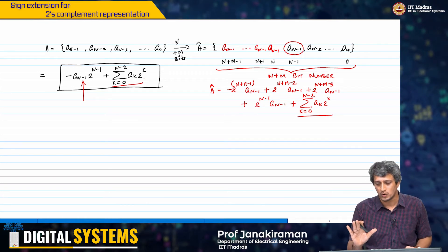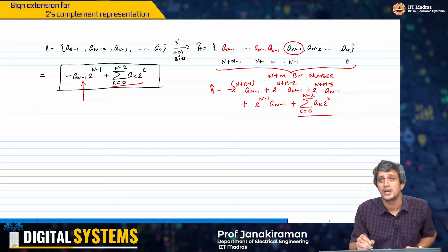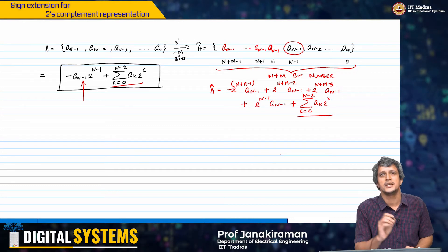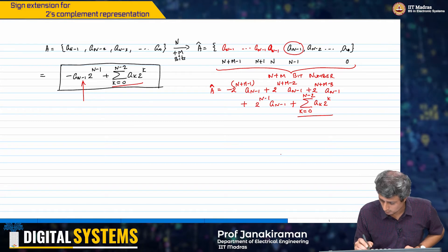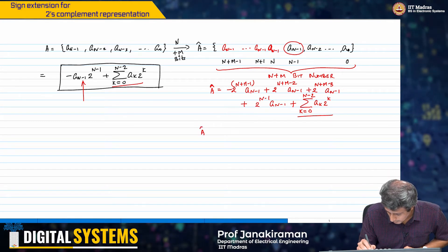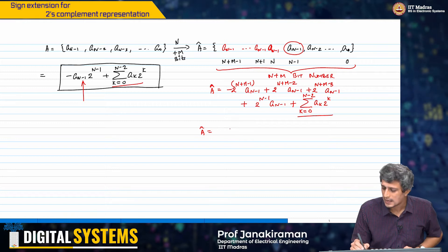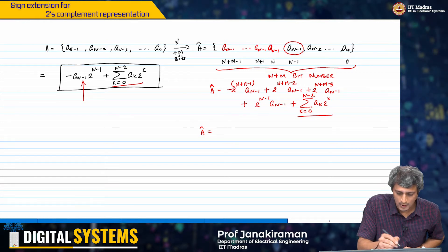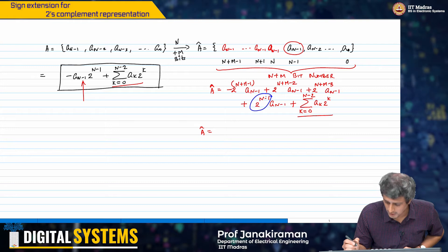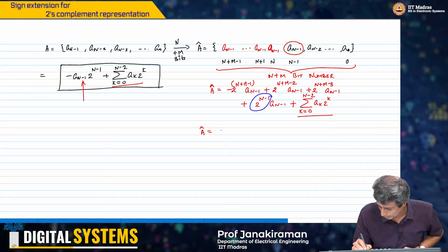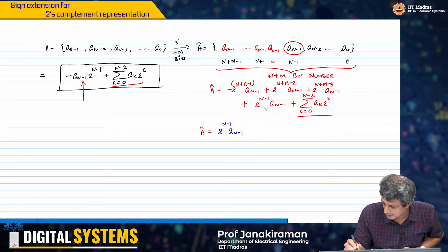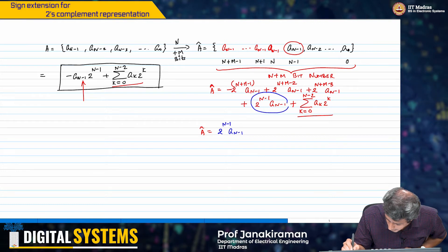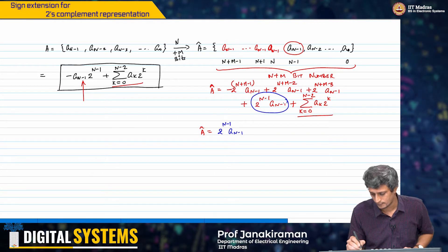The only thing I need to show is that the summation of the other terms is basically just minus A_(n-1) times 2^(n-1). So what I will do is take A_hat and factor out 2^(n-1) A_(n-1) — in fact, I will take this entire term as a common factor.